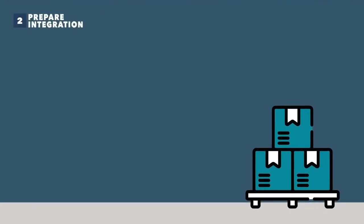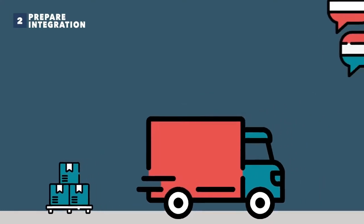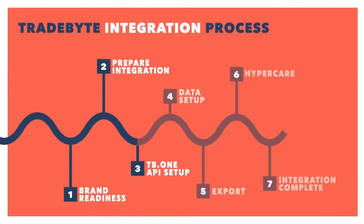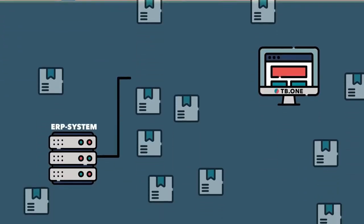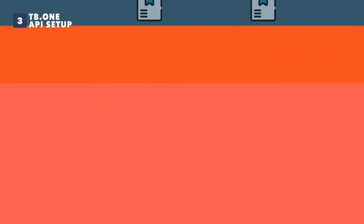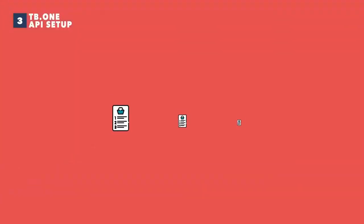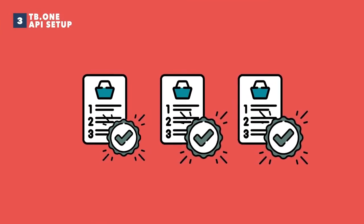You define all the important channel settings such as your stock rules, shipping methods, or language settings. In step three, TB1 API setup, you can set up your interfaces to us if needed. Maybe you want to connect your ERP system or use TB1 for your order management. Using test orders, you can make sure that everything works as it should.